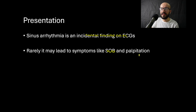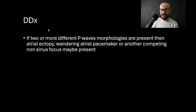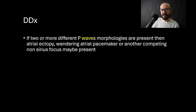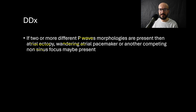Sinus arrhythmia is an incidental finding on ECGs, and rarely it may lead to symptoms like shortness of breath and palpitations. Regarding differential diagnosis, if two or more P wave morphologies are present on the ECG, then atrial ectopy, wandering atrial pacemaker, or another competing non-sinus focus may be present, which indicates a problem.